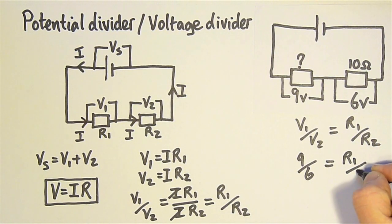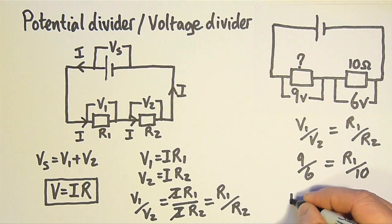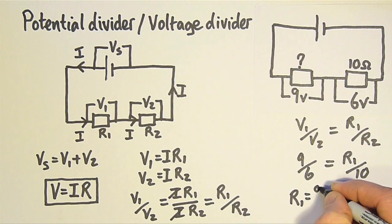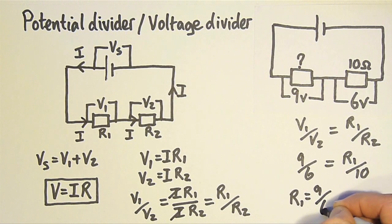R1 equals 9 divided by 6 multiplied by 10, which equals 15 ohms.